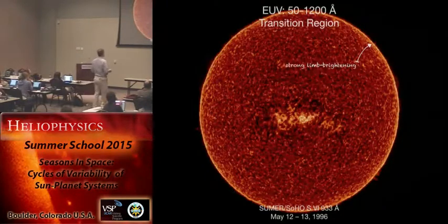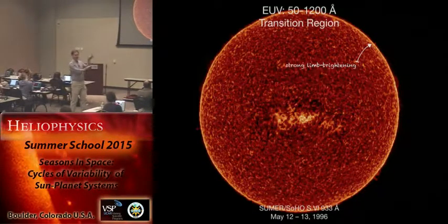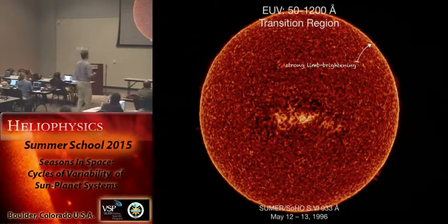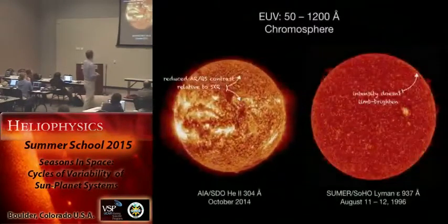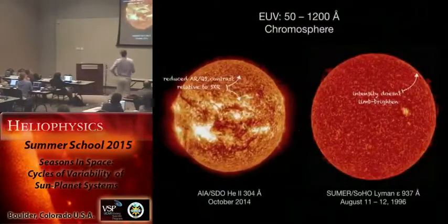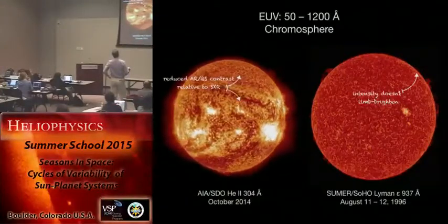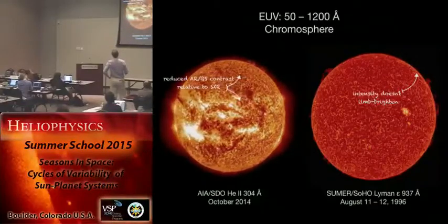The transition region — that thin layer connecting the photosphere and the corona — has a really different morphology from the corona. It's filled with low-lying structures, and in the quiet sun there's ample transition region emission. So the contrast between quiet and active sun is not all that large, as you can see in an AIA movie at 304 angstroms and in spectrally pure optically thick emission line images.